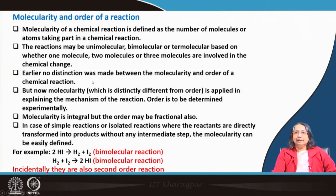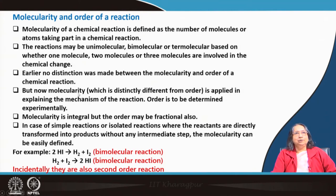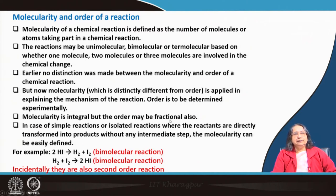But now, after the discussion of chemical kinetics in module 3, you all know that molecularity and order are not the same. We apply the term molecularity to explain the mechanism of a chemical reaction, but order is an experimentally determined parameter — it can be a fraction or an integer — whereas molecularity is always an integer. So molecularity and order are two different things for a chemical reaction.